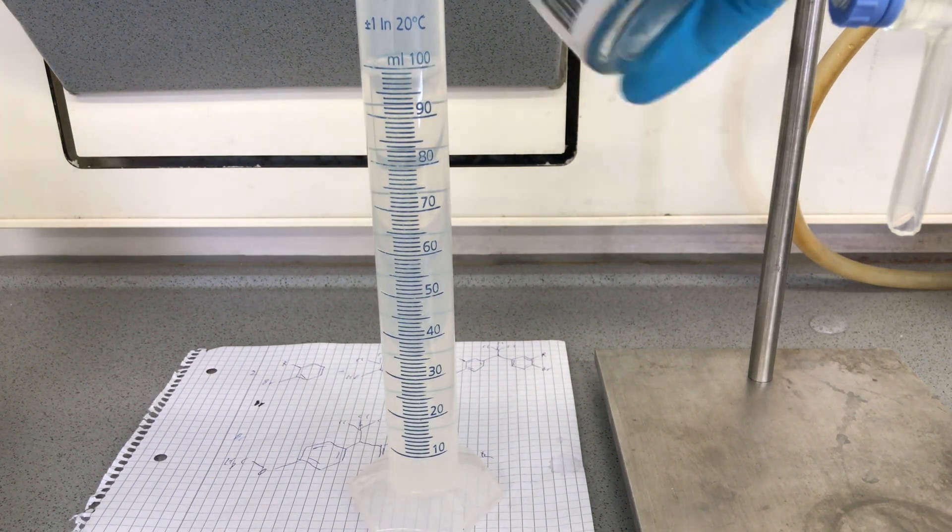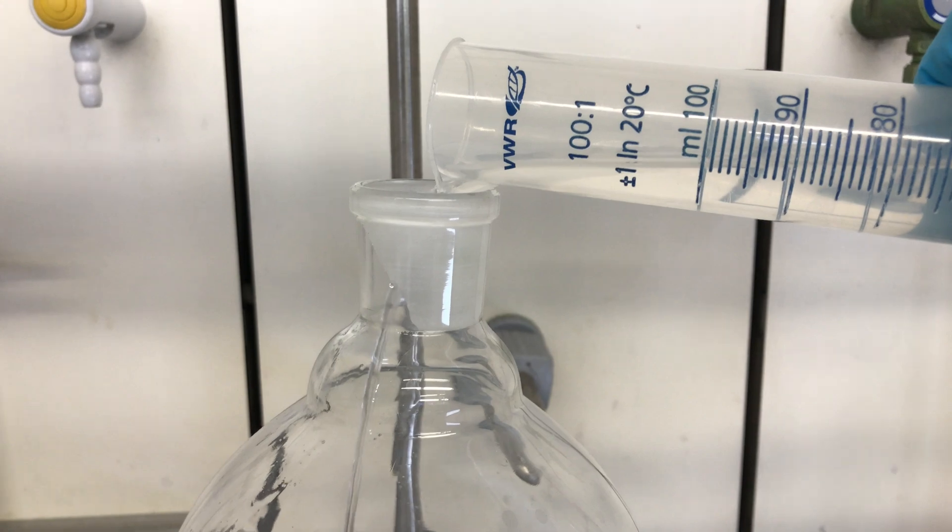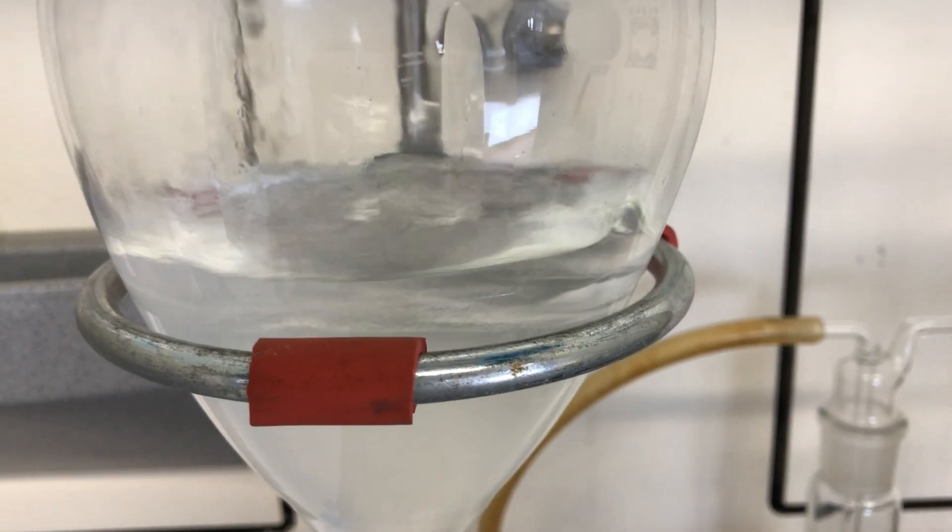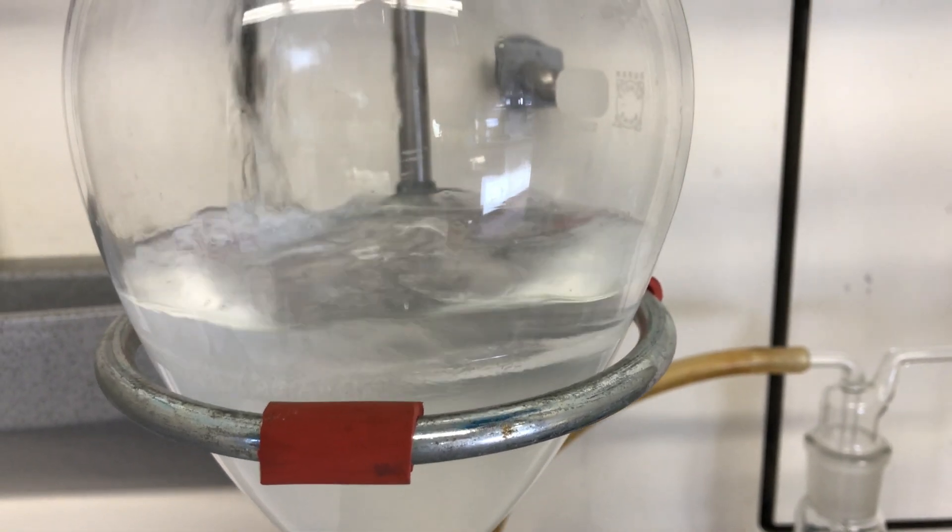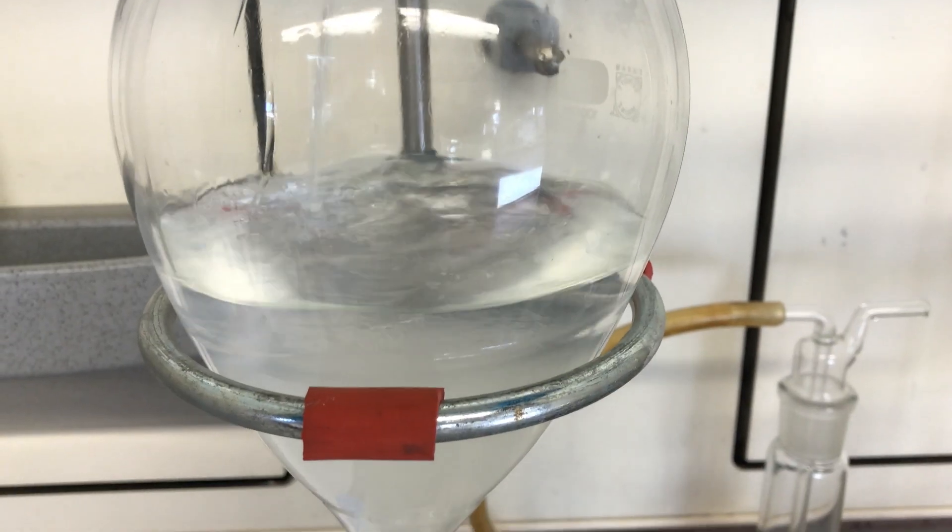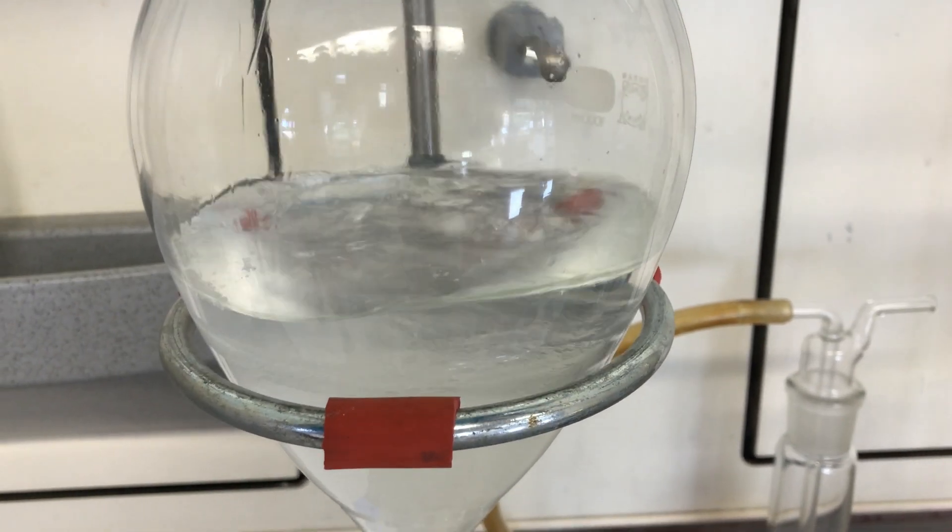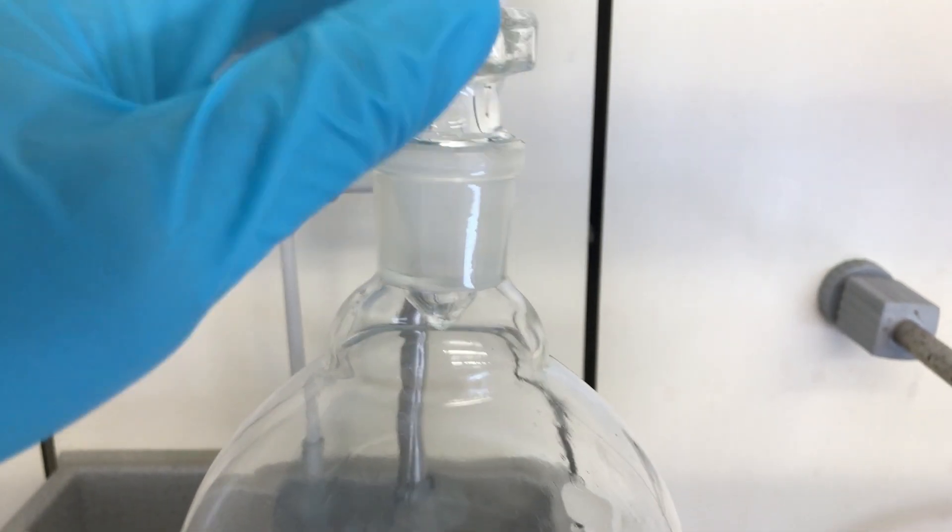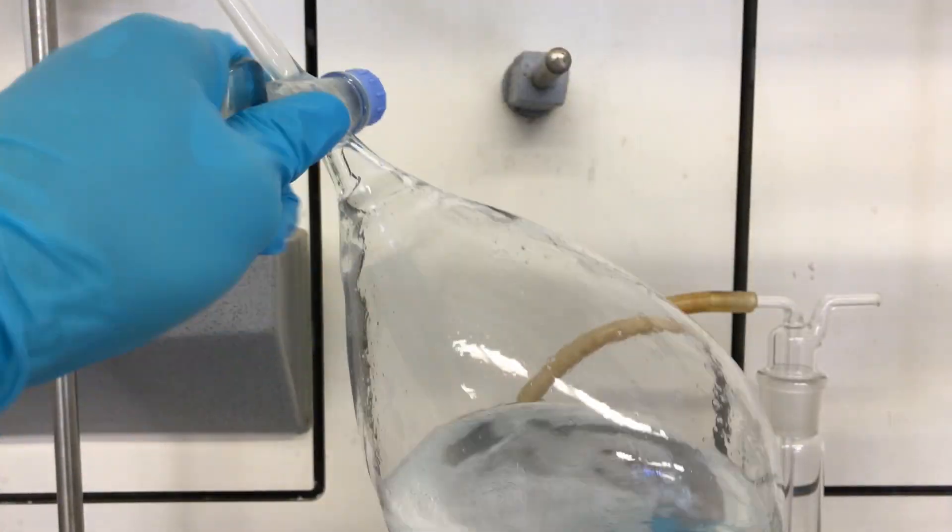Everything was transferred to a large separatory funnel followed by 140ml of MTBE to act as an extraction solvent. Keep in mind, while this is a great alternative to diethyl ether and it is a great solvent, it is very volatile and highly flammable. Therefore all of this was done under a fume hood.